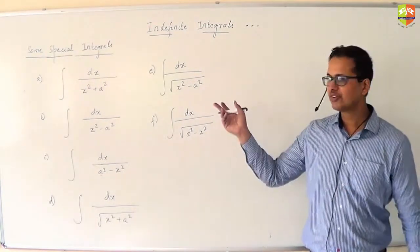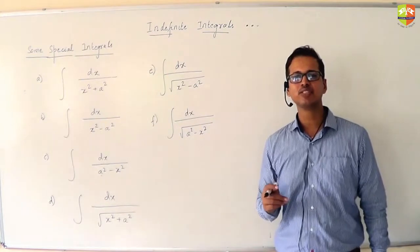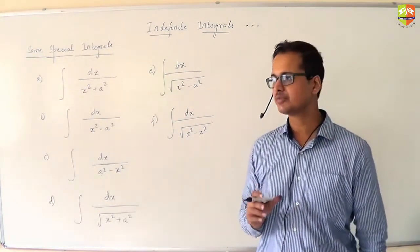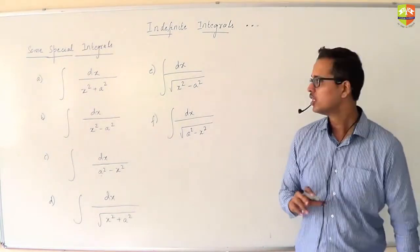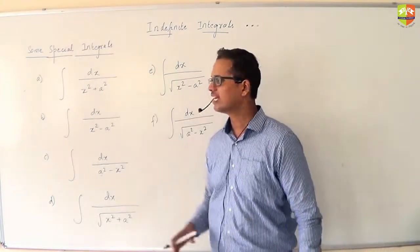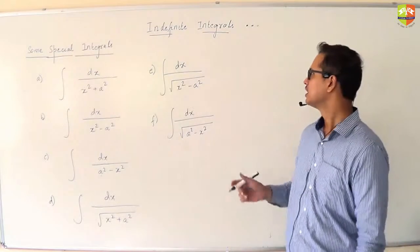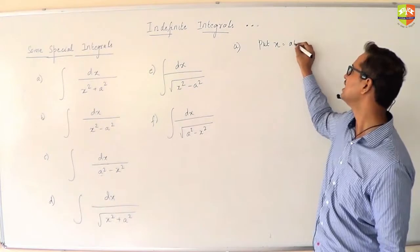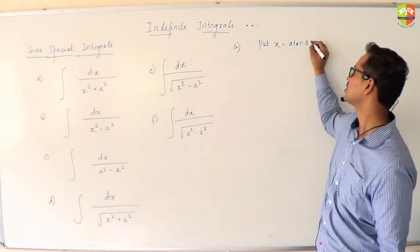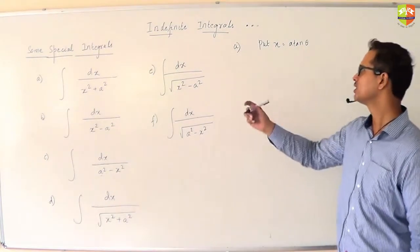I will start with the first one. If you recall, I have given you a list of standard trigonometry substitutions when I was doing differentiation with you. So in cases where you have x squared plus a squared arising, the best substitution is put x as a tan theta or a cot theta. Let's do it here.